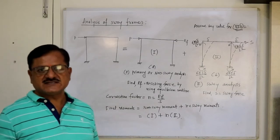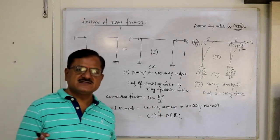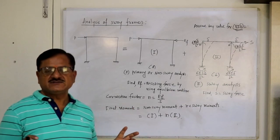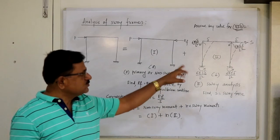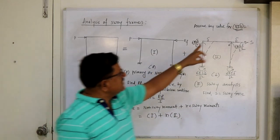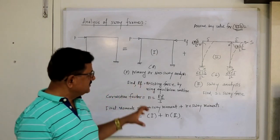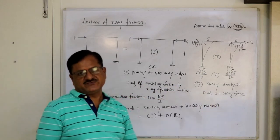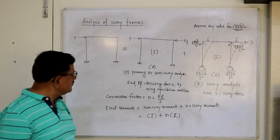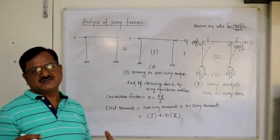Summary of steps for sway frame analysis: Step 1 — Assume sway is prevented, apply RF, carry out non-sway analysis. Step 2 — Find RF using equilibrium conditions. Step 3 — Assume sway towards right with no external loading, assume arbitrary EI·delta, find fixed end moments, carry out sway analysis. Step 4 — Find sway force S using equilibrium conditions. Step 5 — Find correction factor n = RF/S. Step 6 — Final Moments = Non-sway Moments + n × Sway Moments. Then construct BMD.